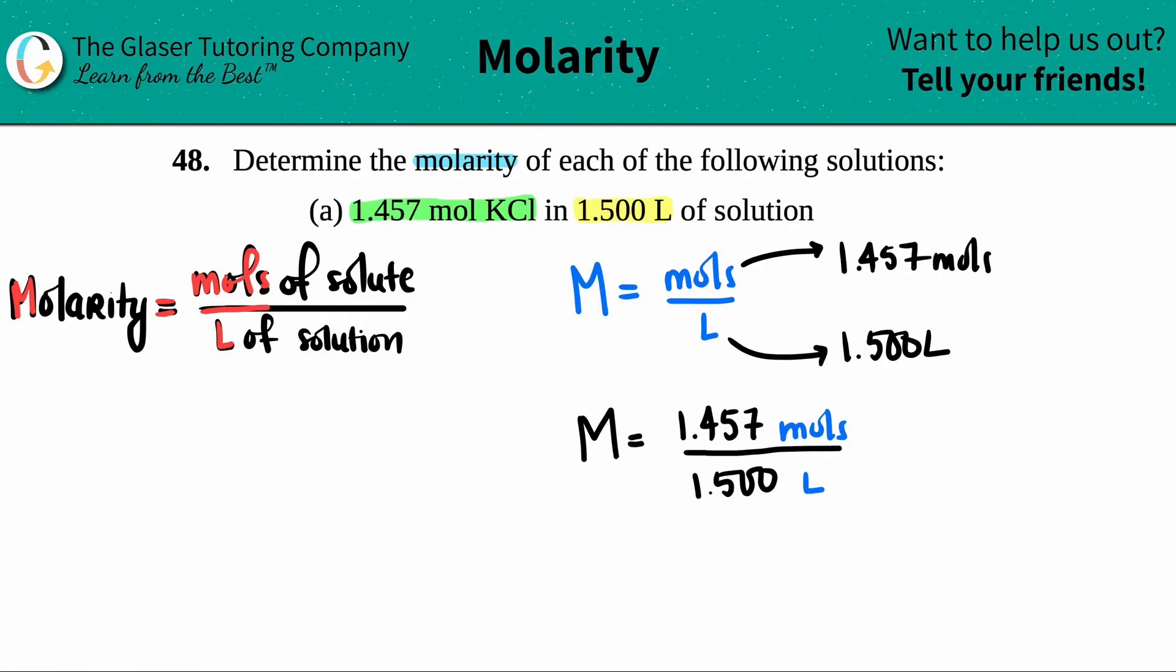Now I'm just literally solving it—calculator out. All I'm doing in the calculator is 1.457 divided by 1.5. Sig figs, though: if we needed to take sig figs into account, we take the lowest amount that's in one number, but they both have four sig figs, so technically my answer should be 0.9713.